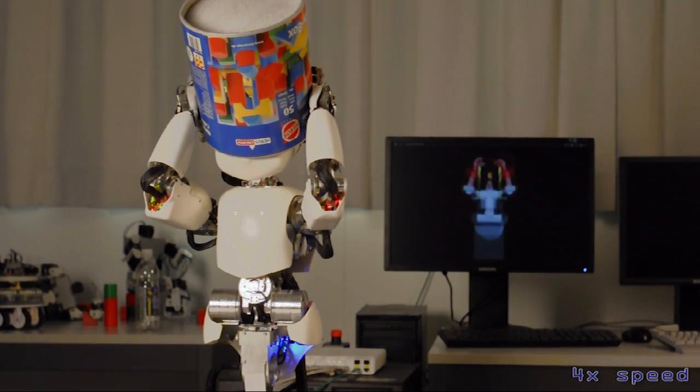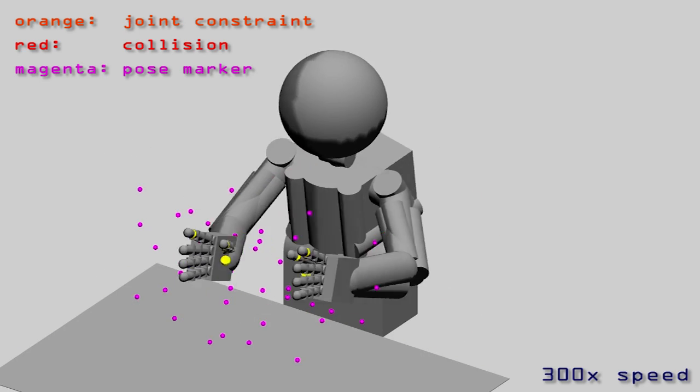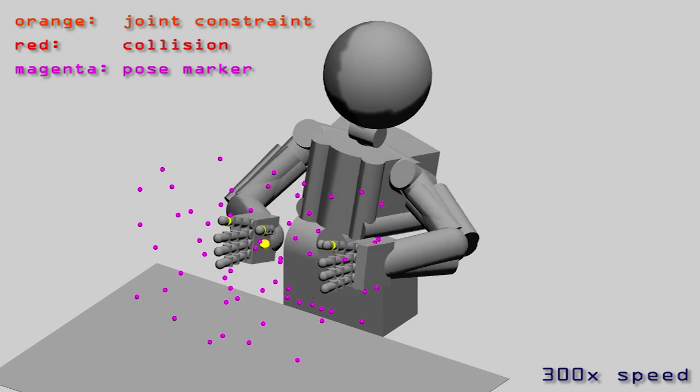Our algorithm builds a map that relates robot poses to the behaviors we specify. Each map contains a family of related motions. Here we use a map in which the robot holds the hands in parallel in different positions.